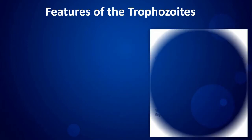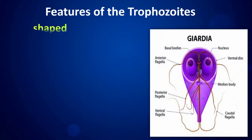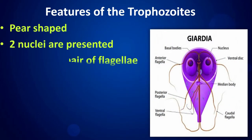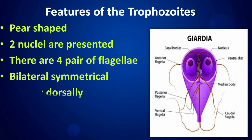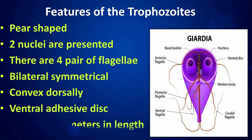Features of the trophozoites: pear shaped, two nuclei are present, there are four pairs of flagella, bilaterally symmetrical, convex dorsal surface, ventral adhesive disc, 10 to 20 micrometers in length.